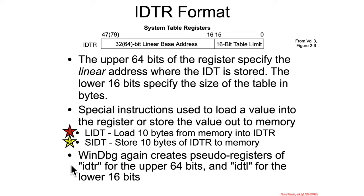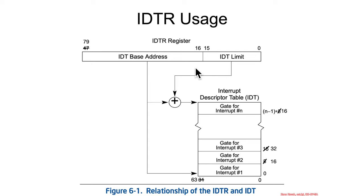WinDbg does its own WinDbg-ism for a pseudo-register, the IDT-L, that holds just the bottom 16-bit portion of what is actually an 80-bit register. So just like with the GDT, the IDTR has a base that points at the start of some table that has a bunch of data structures in it, and a limit that specifies the top end of that data structure.